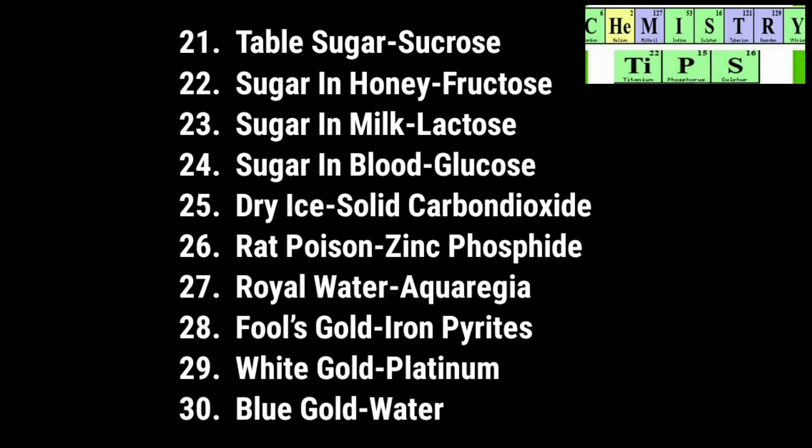Sucrose is also known as invert sugar. What is the sugar present in honey? The major sugar in honey is fructose. Then what is the sugar present in milk? It is lactose. Sugar in blood — that is glucose. Then what is dry ice? Solid carbon dioxide, or solid CO₂, is known as dry ice.